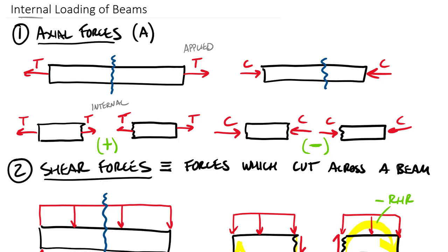Those are the four different types. The process to solve for internal loading at any given point is: cut the beam at that point, choose whether to solve on the right or left side, draw all assumed positive shear, moment, and axial load, then solve them using equations of equilibrium. We'll walk through an example to show exactly how to do this.